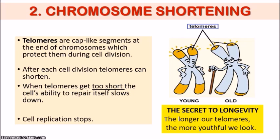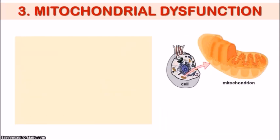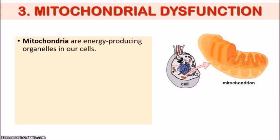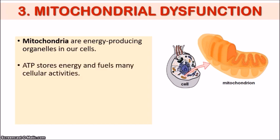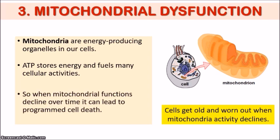Aside from shorter telomeres, studies have shown that mitochondrial dysfunction can also play a part in cellular degeneration. Mitochondria are energy-producing organelles in our cells responsible for manufacturing ATP — adenosine triphosphate — which stores energy and fuels many cellular activities. When mitochondrial function declines over time, it can lead to programmed cell death according to scientists, and when cells get old and worn out, that usually indicates mitochondrial activity has declined.